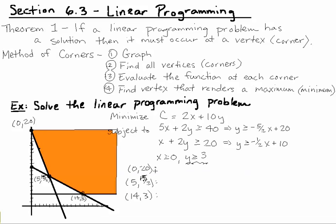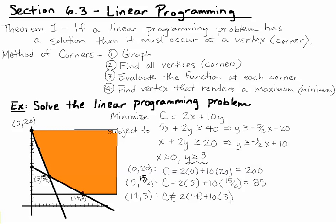Now we substitute these values into our function. For (0, 20): C = 2(0) + 10(20) = 200. For the second vertex (5, 15/2): 2(5) is 10, 10(15/2) is 75, so 10 + 75 = 85. Finally, for (14, 3): C = 2(14) + 10(3) = 28 + 30 = 58.